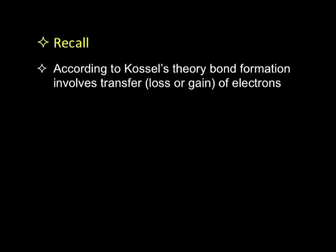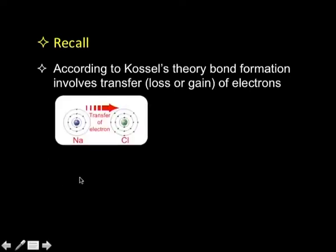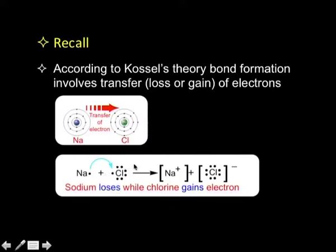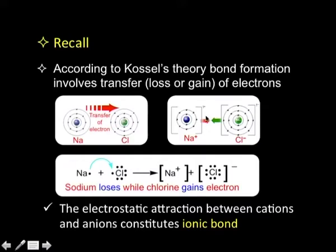Let us move from here and recall a few things before we come to the main theme of today's session. Firstly, you will recall from earlier sessions that according to Kossel's theory, bond formation basically involves transfer — that is loss or gain — of electrons. If you take the example of bond formation in sodium chloride, an electron from sodium atom is transferred to a chlorine atom. Sodium loses an electron whereas chlorine atom gains an electron and both of them become ions. Sodium becomes a sodium ion — a cation — and chlorine atom becomes a chloride ion — an anion. These two charged species interact electrostatically, and this kind of electrostatic interaction between the two ions of opposite charge is what constitutes an ionic bond. The compounds formed in such a fashion are called ionic compounds or ionic solids.